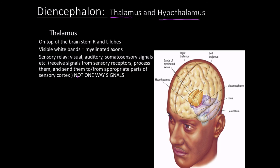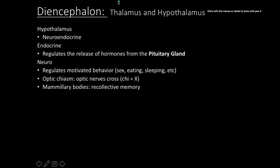For example, a sight signal goes to the thalamus first, and then the thalamus says, 'This is a vision signal, I need to send this to the occipital lobe,' or 'This is a hearing signal, let's send this to the temporal lobe.' And it's not just one-way — it can send signals back and forth.